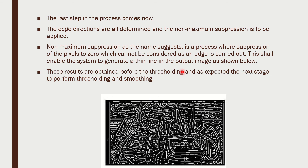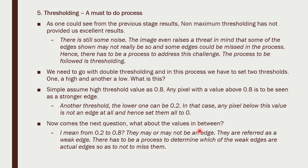Now, non-maximum suppression: we suppress to zero any pixels that cannot be considered as an edge. There are some pixels which cannot be edges, and we suppress them to zero. Once we do this we get a result, but it is still clumsy and needs further processing to get the clean, precise result we expect.